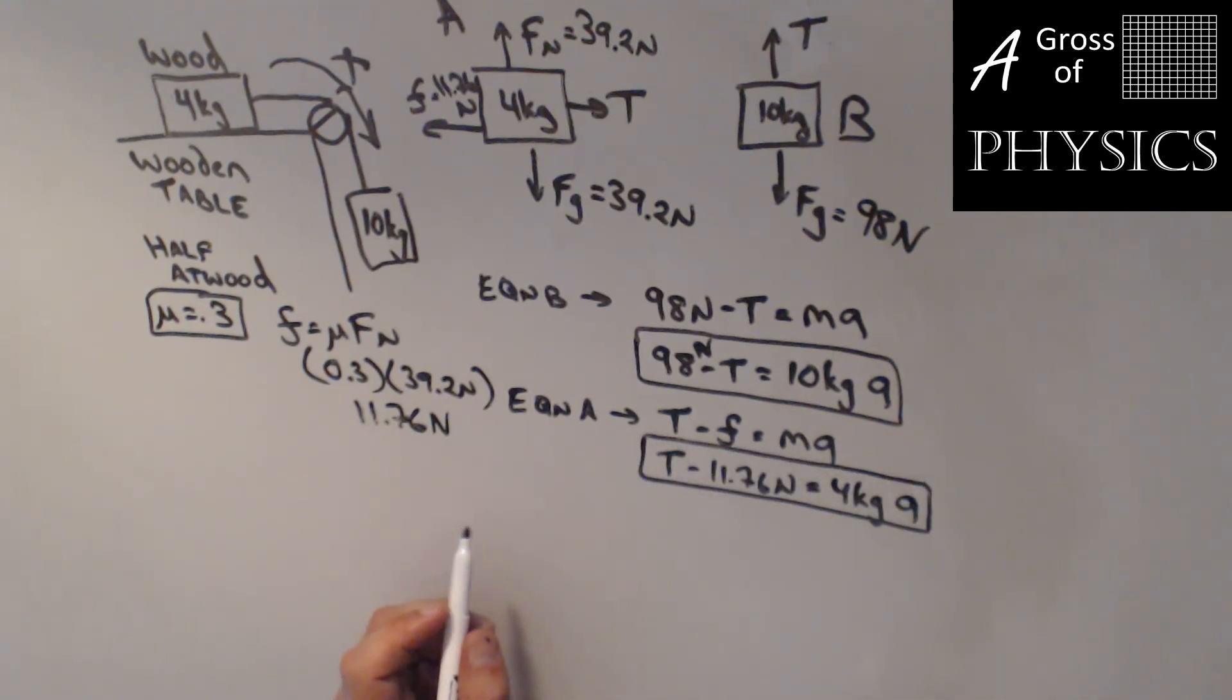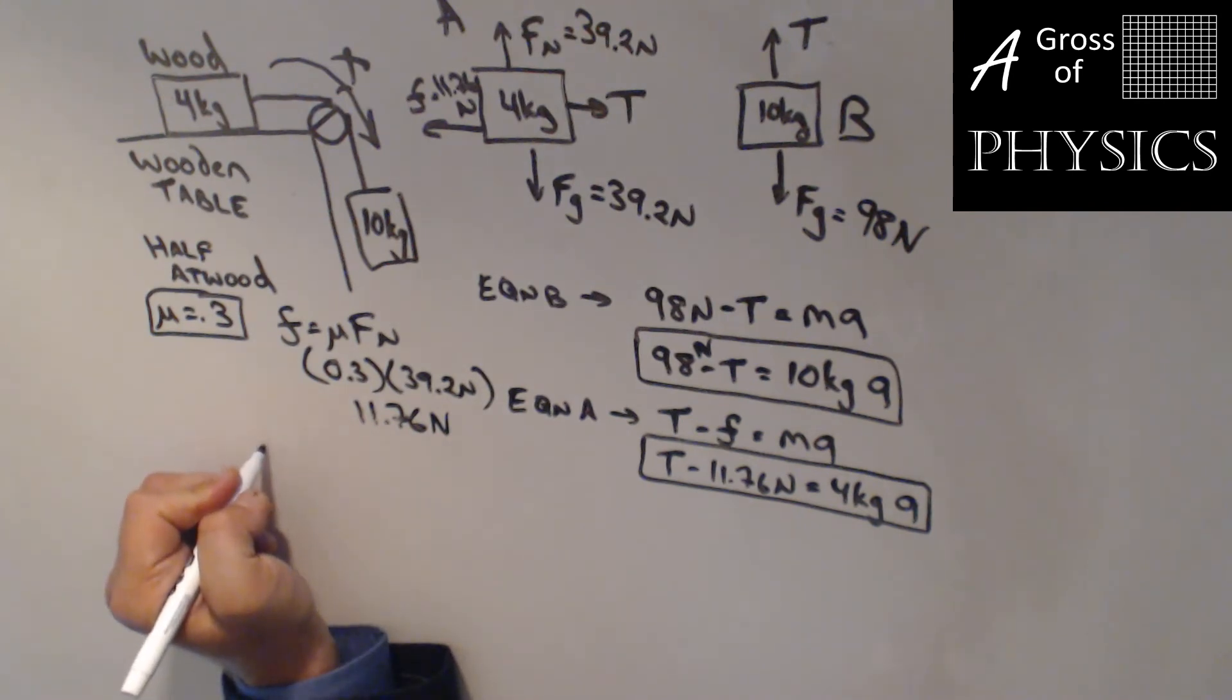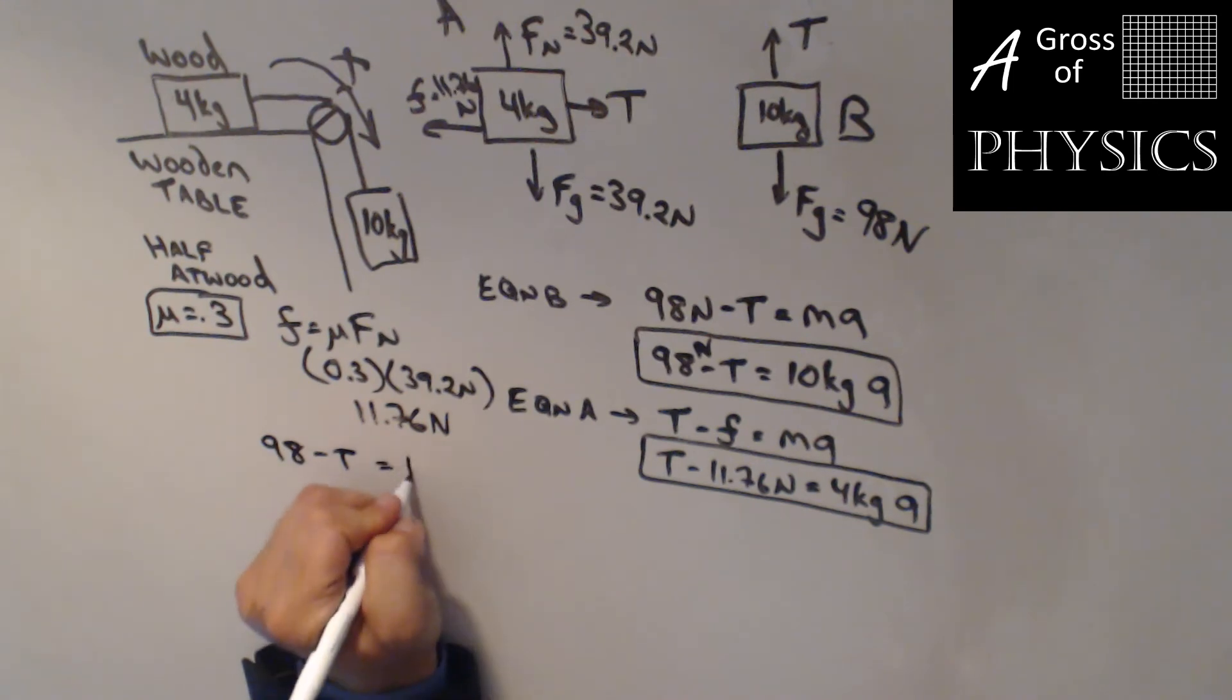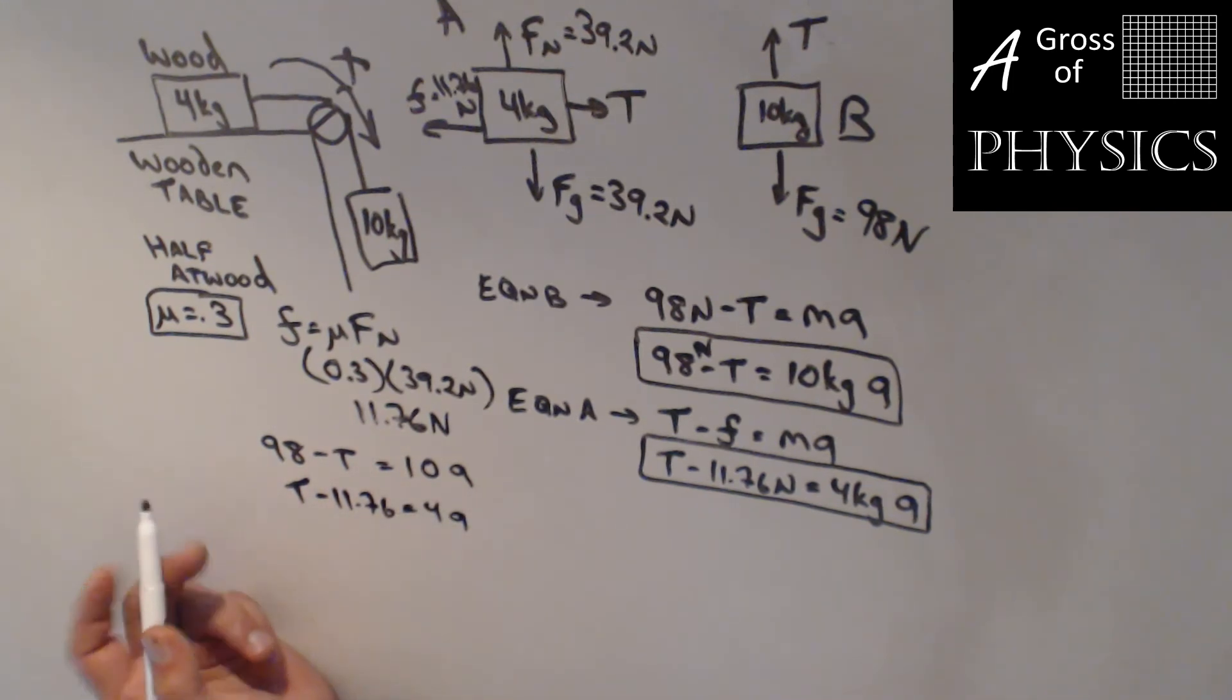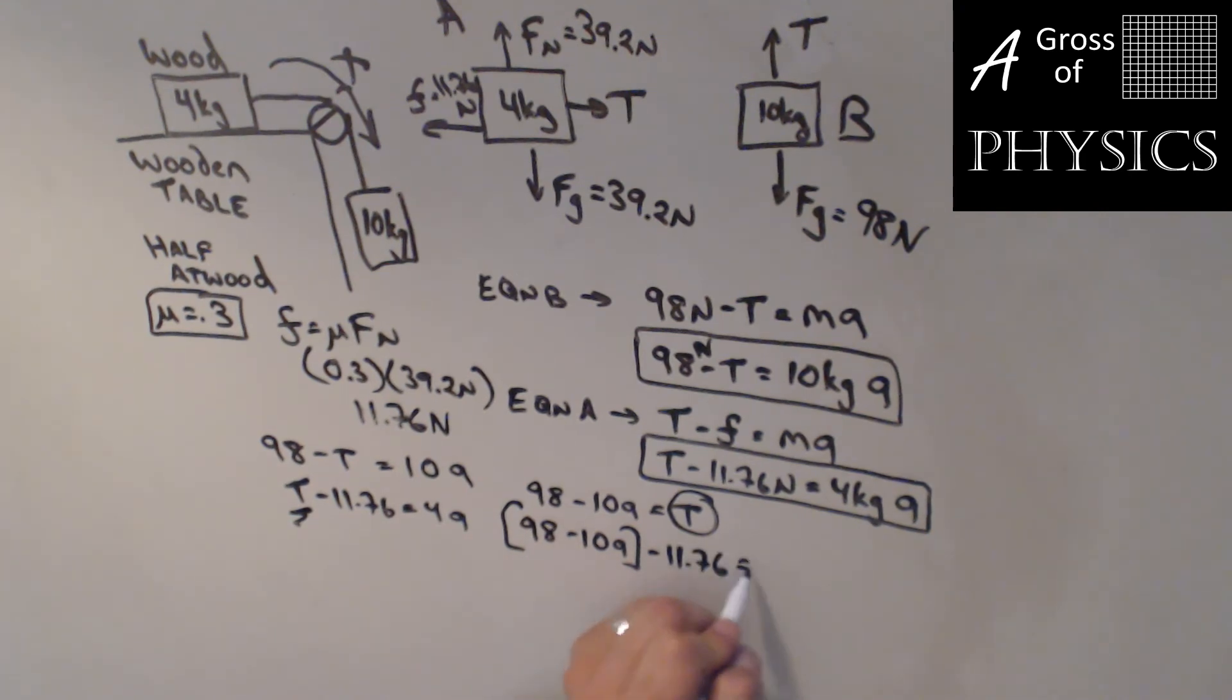We have 98 - T = 10A, and T - 11.76 = 4A. They're both equally complex, so I'll solve for T on the first one. I'll get the 98 by itself: 98 - 10A = T. I'm bringing the T over and the 10A on the other side. Then I'll plug it into the second equation: 98 - 10A - 11.76 = 4A.